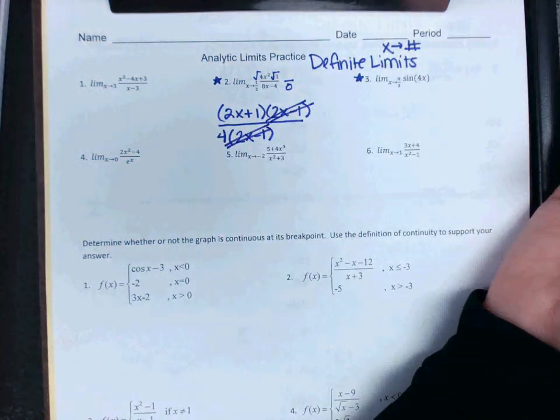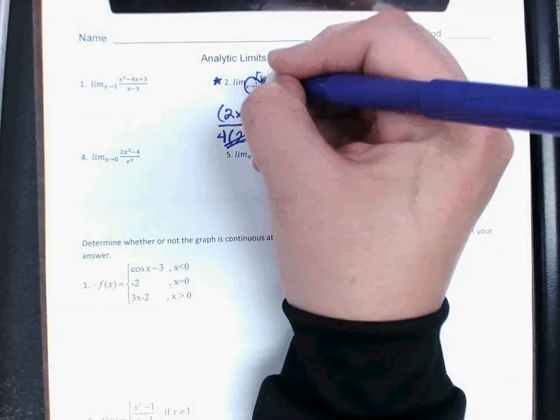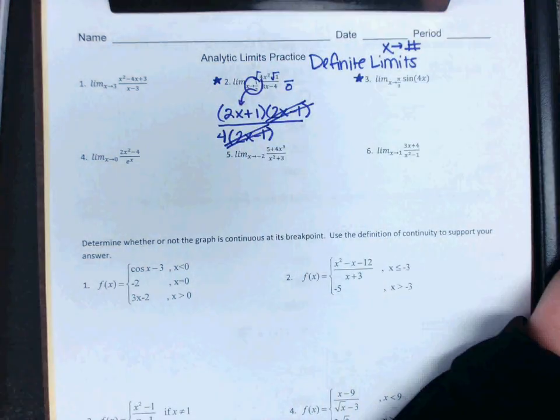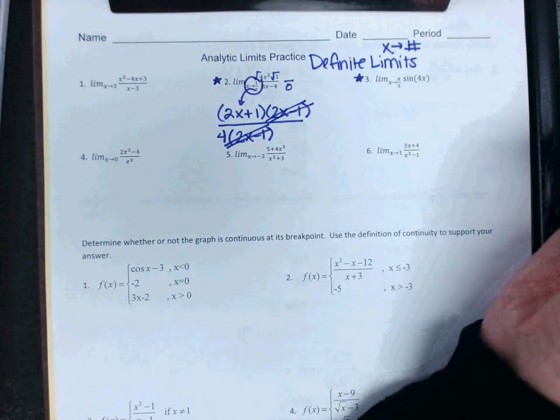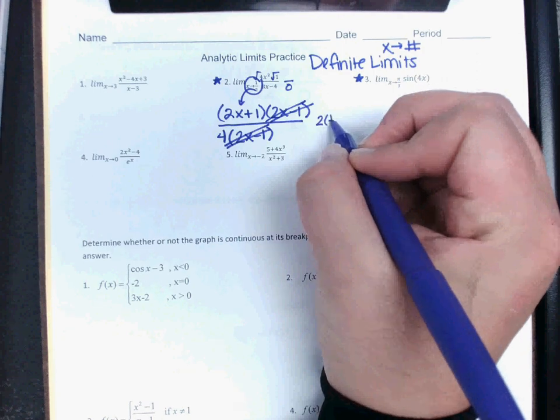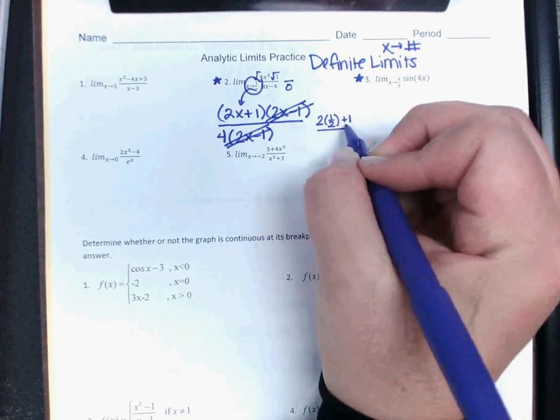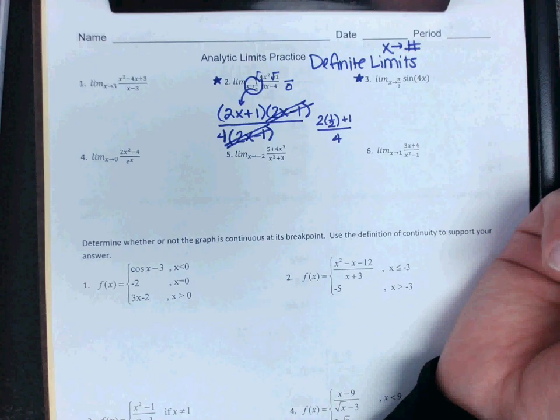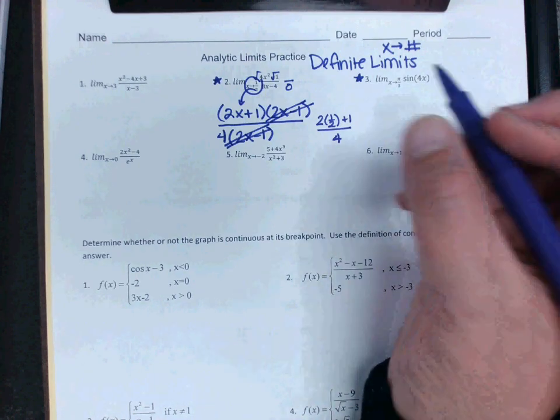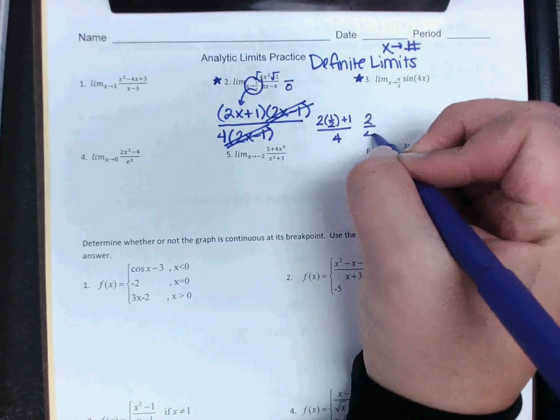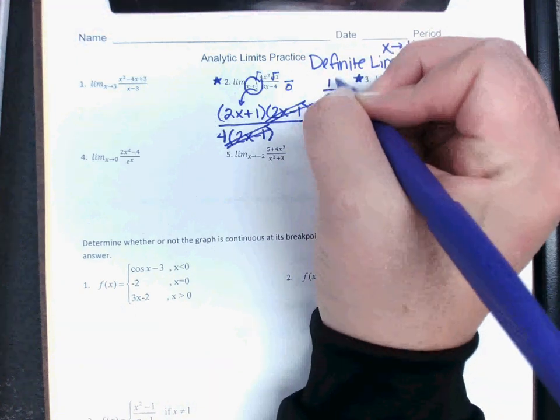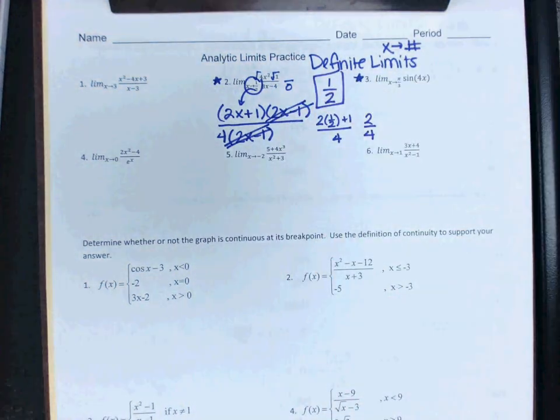And then remember, after we factor cancel, that's where we can take our 1 half and we can pop it back into our equation. So we'd have 2 times 1 half plus 1 over 4. 2 times 1 half is 1. 1 plus 1 is 2. 2 over 4 is going to reduce to 1 half overall. Sorry, that's kind of messy. Hopefully you followed it.